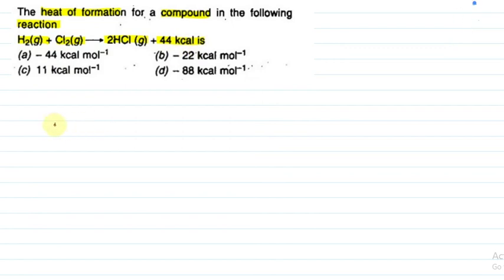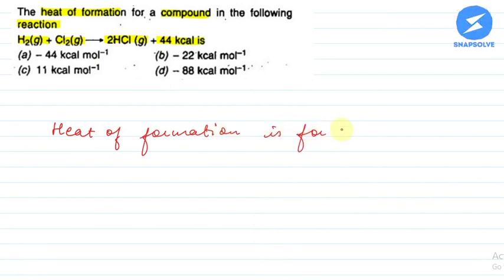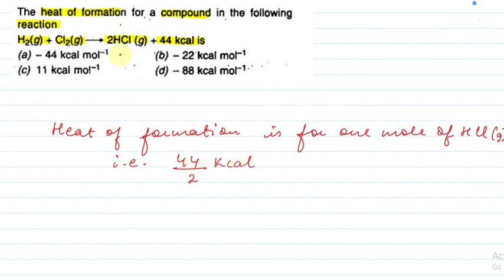The heat of formation is for 1 mol. Here we have 1 mol of HCl gas, so it will be 44 upon 2 kilocalorie. We have 2 mols here, so 1 mol divided by 2.